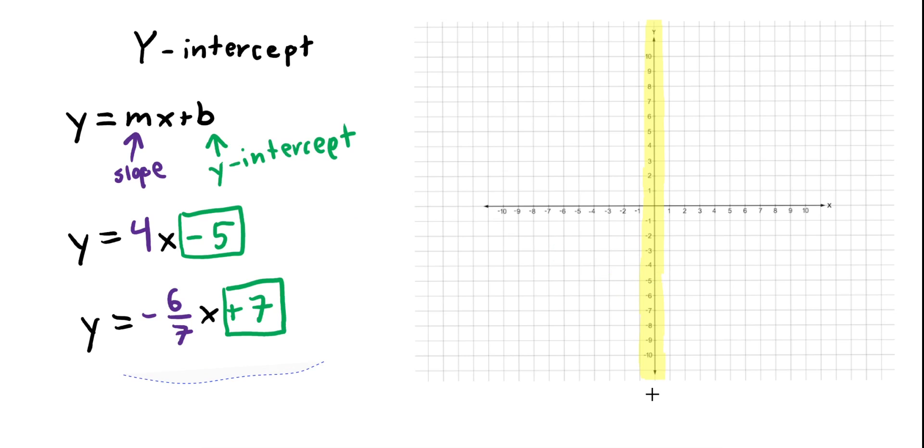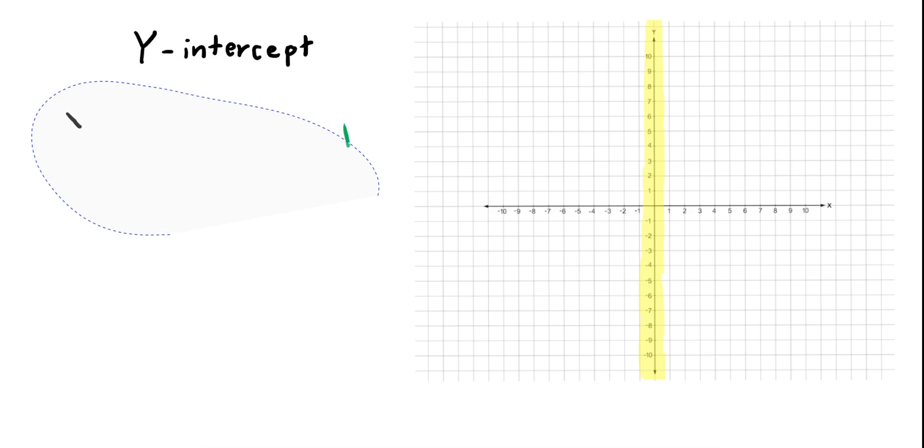Now, you may get some questions where they try and be sneaky and they don't really tell you what the y-intercept is, but they give you enough information to figure it out. So let's say that you get a question that says, hey, your slope is going to be negative 4 and a point on the line we're talking about is going to be 2, 6. Work out what the y-intercept is.